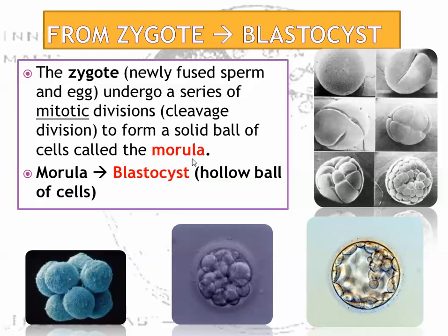That's a solid ball of cells. Eventually, when the cells start to move towards specific areas, move towards the outside, and start to create a space inside, we call it a blastocyst. A blastocyst. There's another stage called the gastrula as well. But the blastocyst is the level that we need to understand — it's a hollow ball of cells.